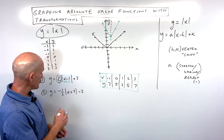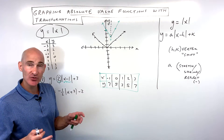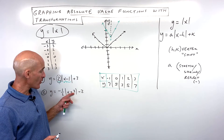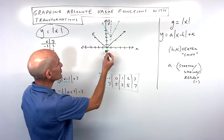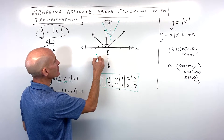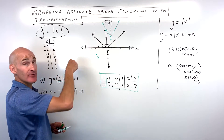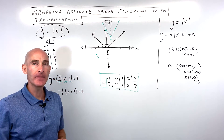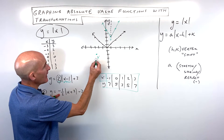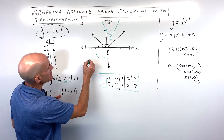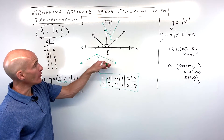Let's look at example two: y equals negative one-half times the absolute value of x plus three, minus two. The plus three shifts the graph left three (opposite effect), and the minus two shifts it down two. So the vertex is at (negative three, negative two). The negative one-half reflects the graph because it's negative, and the one-half compresses it, making it wider. Using the slope method from the vertex: go down one and right two, then also down one and left two, since it's symmetric. The graph is wider due to the one-half and opens downward because a is negative.